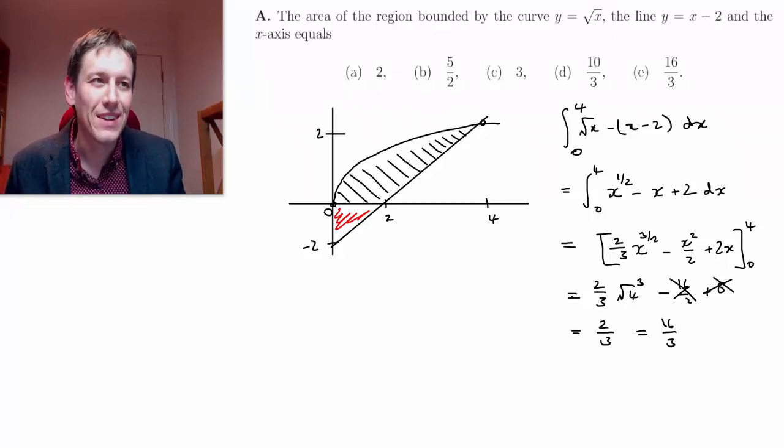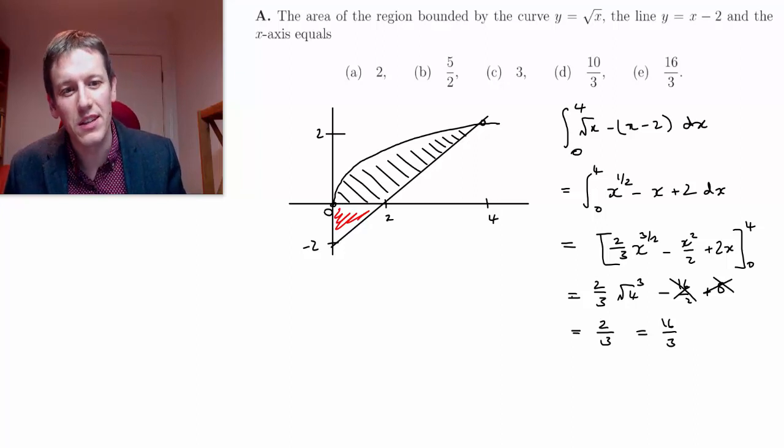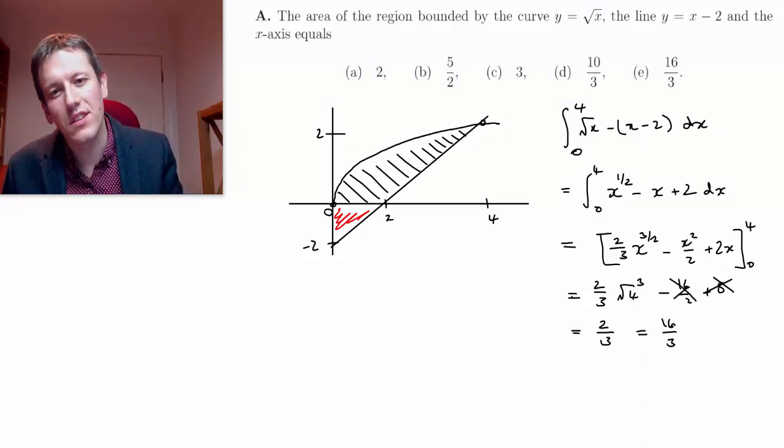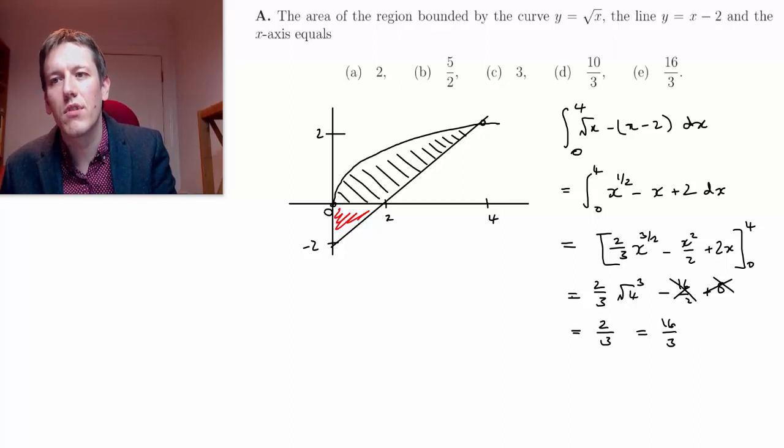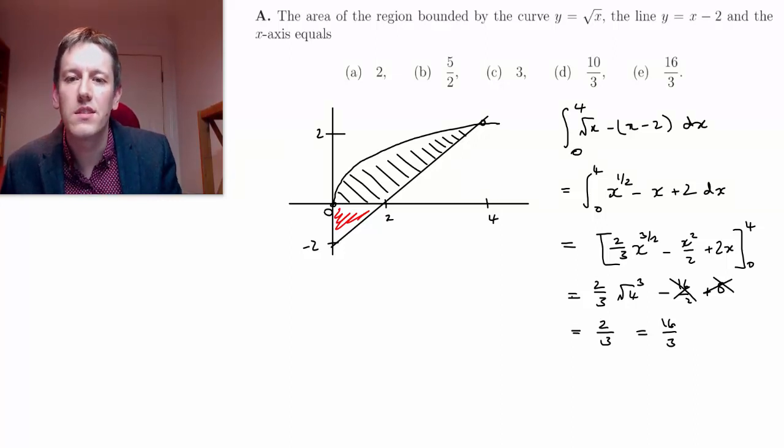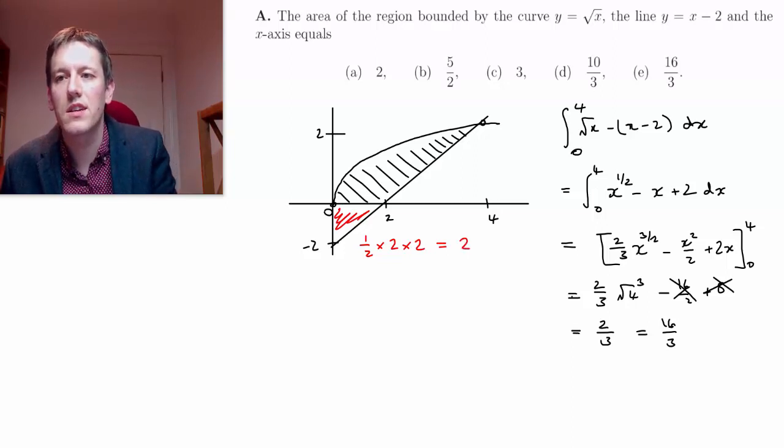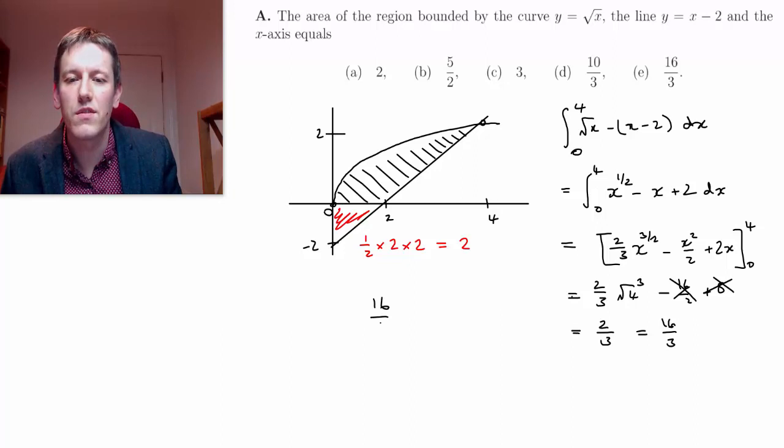Which they've given as one of the answers here, so they put the obvious wrong answers in here as well, because this answer gives us this whole area. And now I've got to think about the red triangle here, and this is just a triangle half base times height, so its area is 1 half times base times height is 2 times 2, so it's just got area 2. So for my final answer here I need 16 over 3 minus 2, so minus 6 over 3, and that gives us 10 thirds. That's also an answer, and that's the correct one.